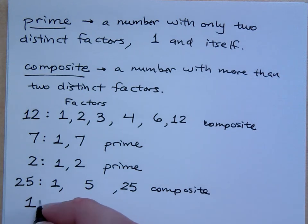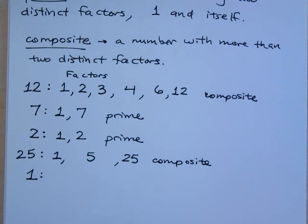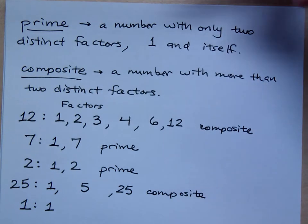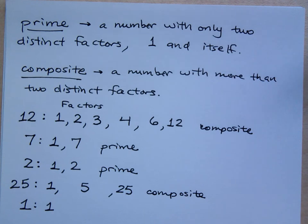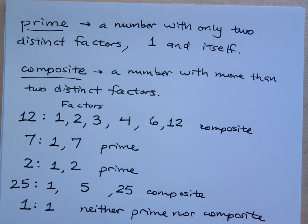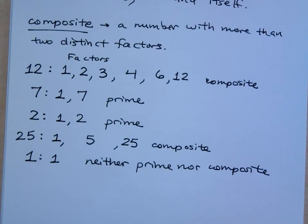What about the number one? What are its factors? Anything else? So is this number prime or composite? Well, what do we say about prime numbers? A prime number is a number with only two distinct factors, one and itself. Does one have two distinct or different factors? No. So this guy is, he is neither prime nor is he composite. Zero is the same way. One and zero are not prime and they're not composite.